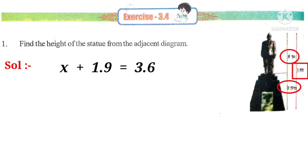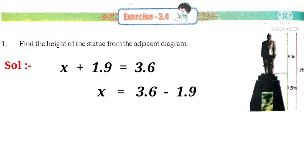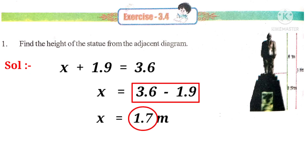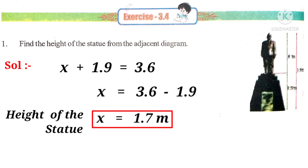So, it can be written as x + 1.9 = 3.6. Now, x = 3.6 - 1.9, because +1.9 when transposed to the right-hand side it becomes -1.9. Then, x = 1.7 meters because 3.6 - 1.9 gives 1.7. So, height of the statue x is equal to 1.7 meters.